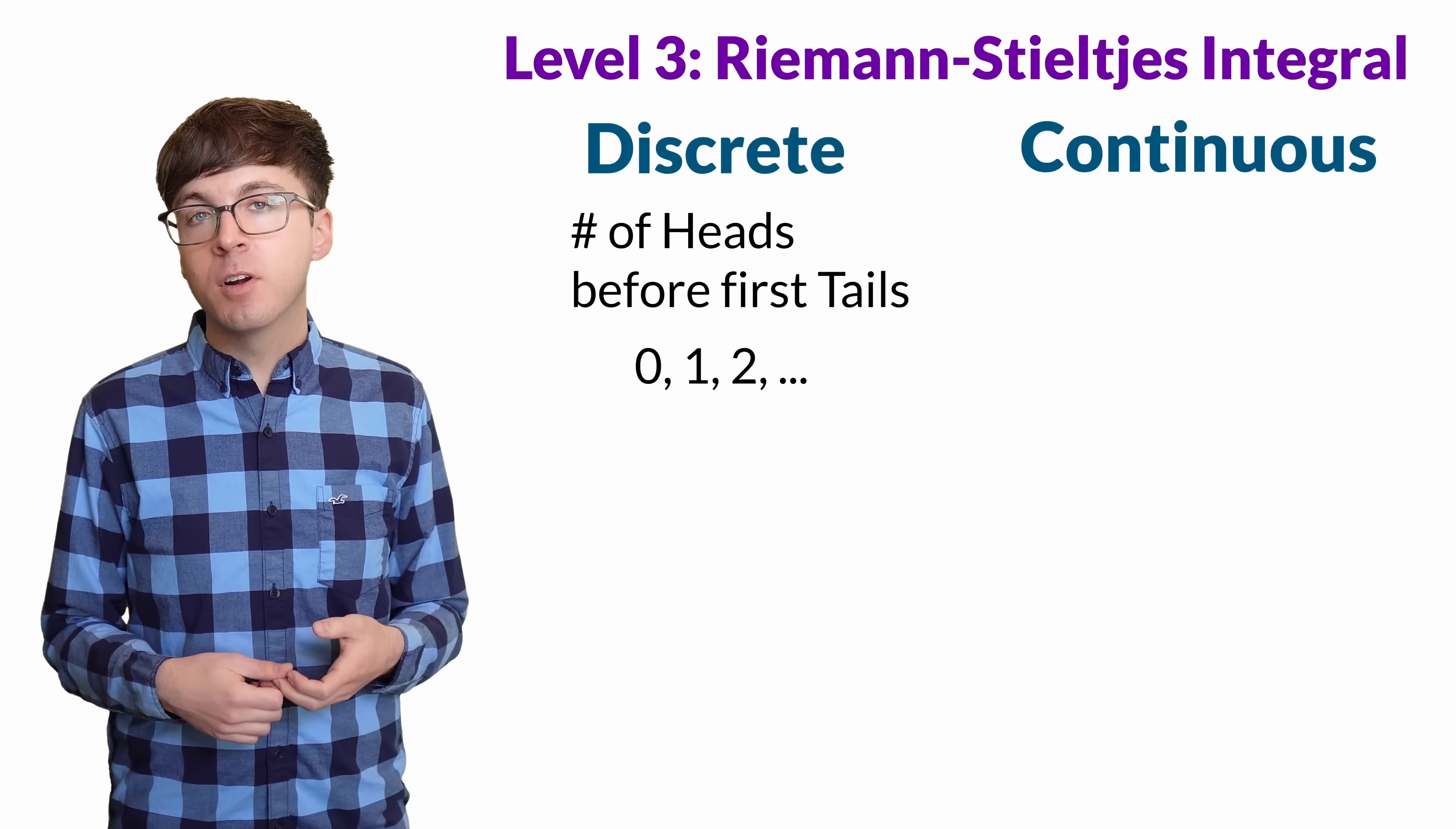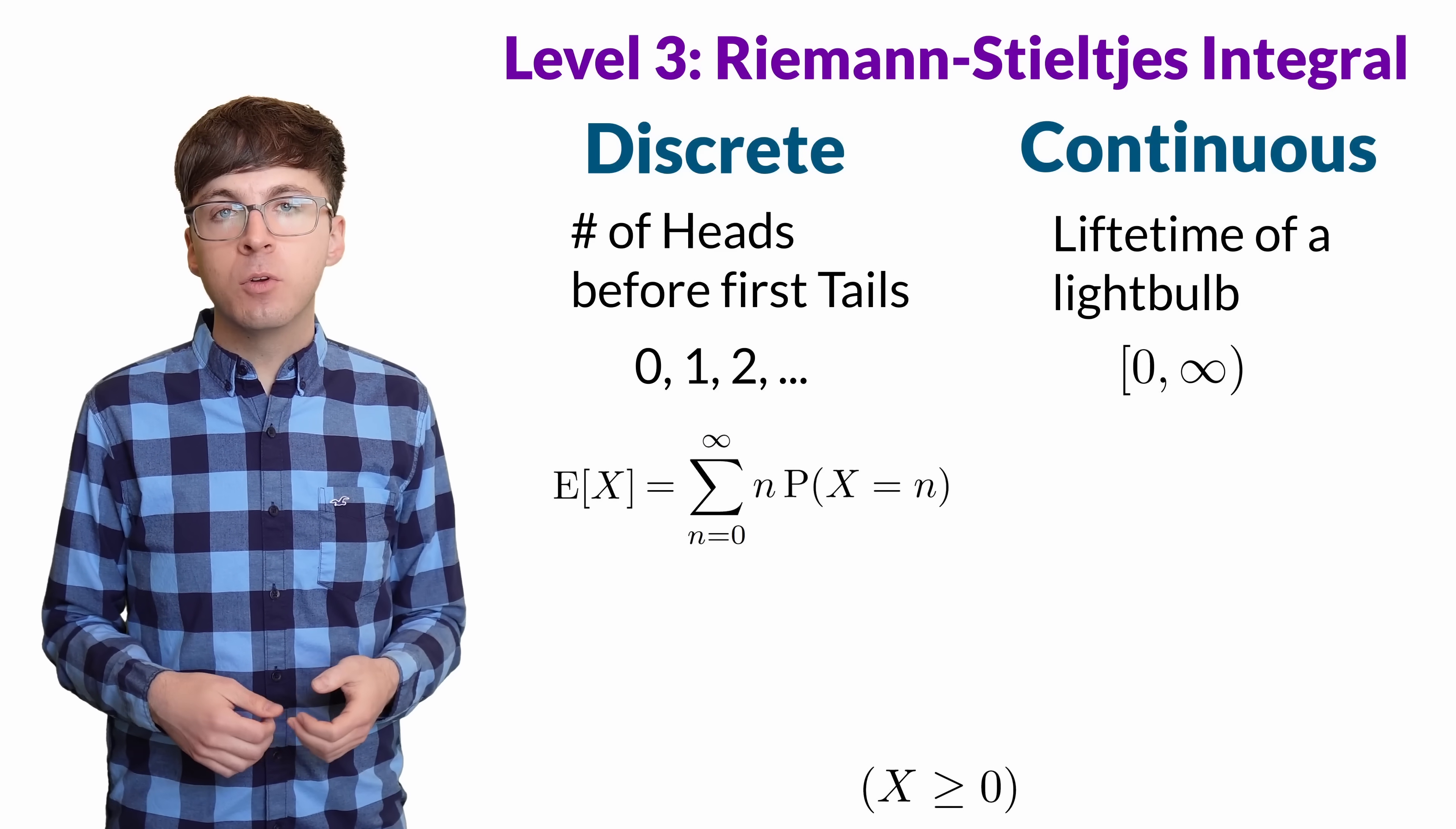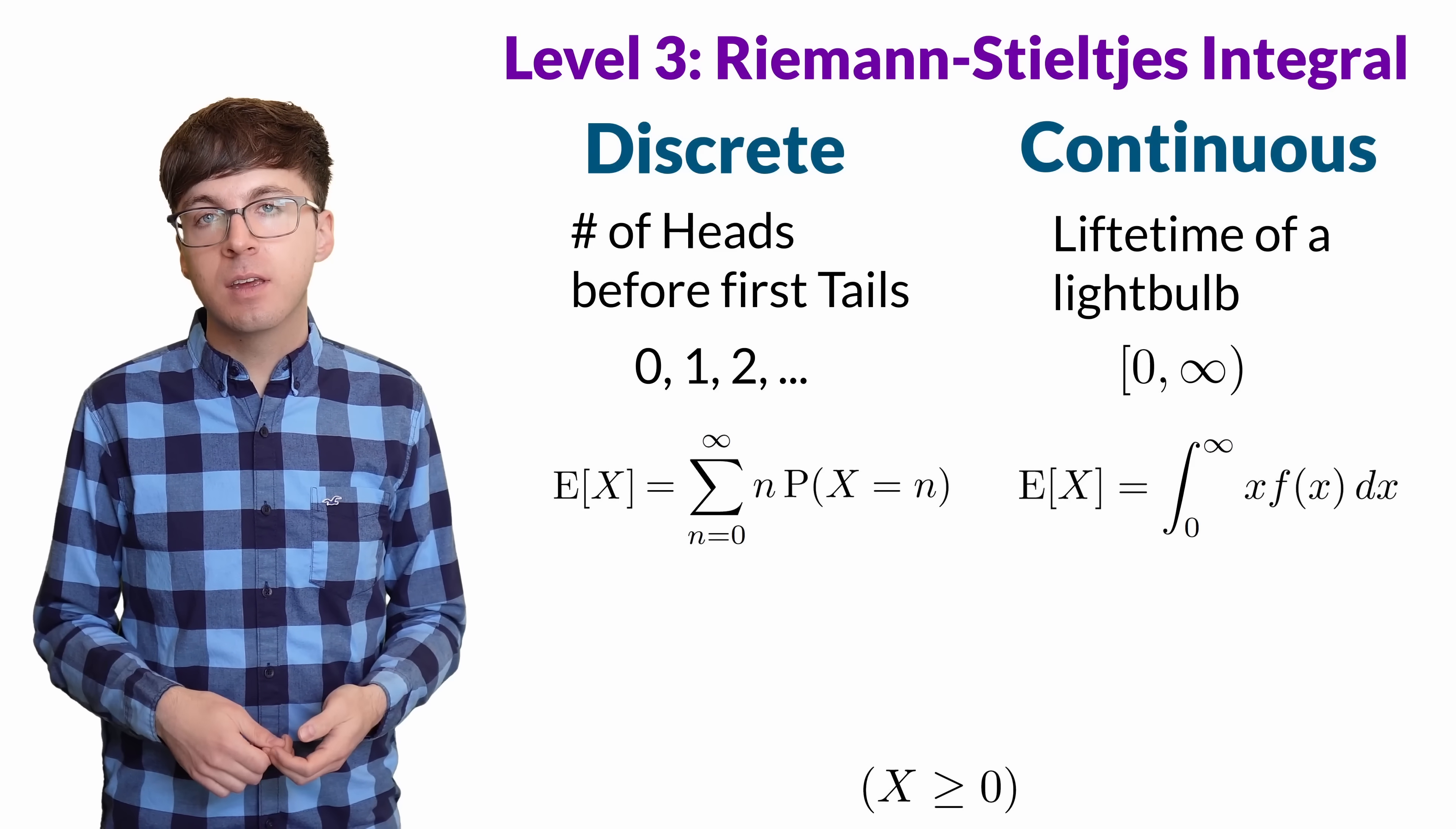A continuous random variable has uncountably many possible values, like the lifetime of a lightbulb. So how do we find the expected value, the average, of each of these random variables? For the discrete random variable, we take each possible value and multiply by the probability of that value occurring, and then add those all up. But continuous random variables have uncountably many possibilities, so we have to integrate a density function instead.